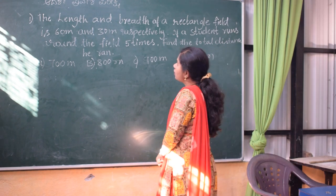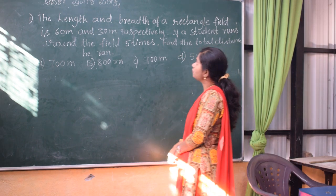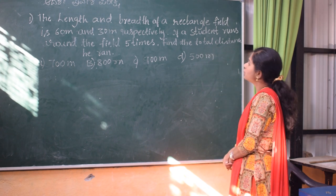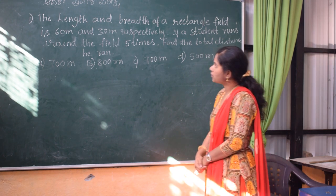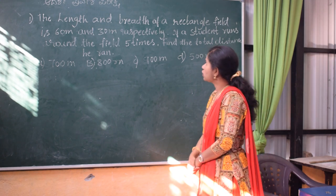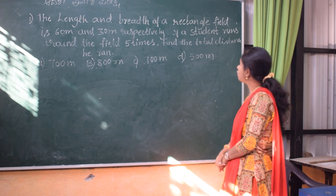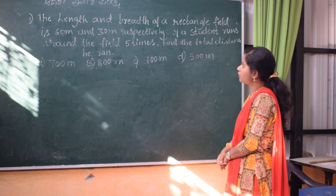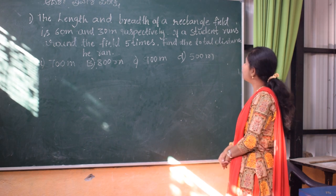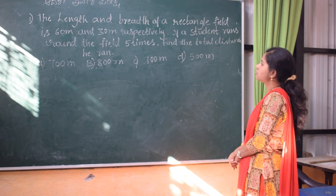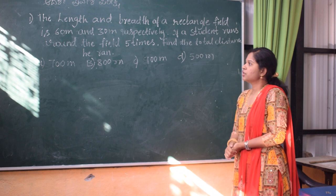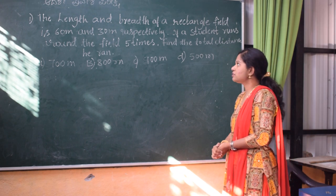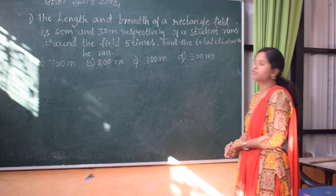The first question: the length and breadth of a rectangular field are 60 meters and 30 meters respectively. If a student runs around the field 5 times, find the total distance he ran. The options are 700 meters, 800 meters, 900 meters, and 500 meters.